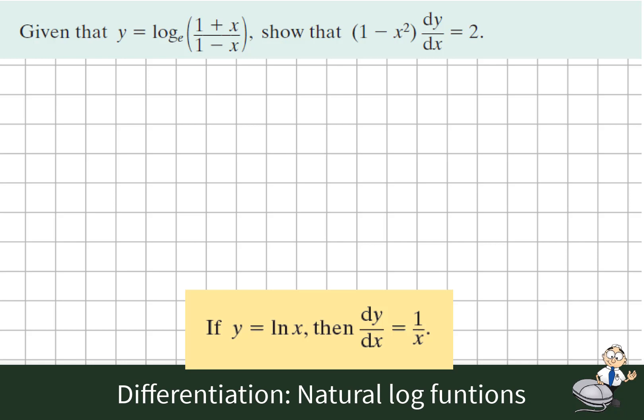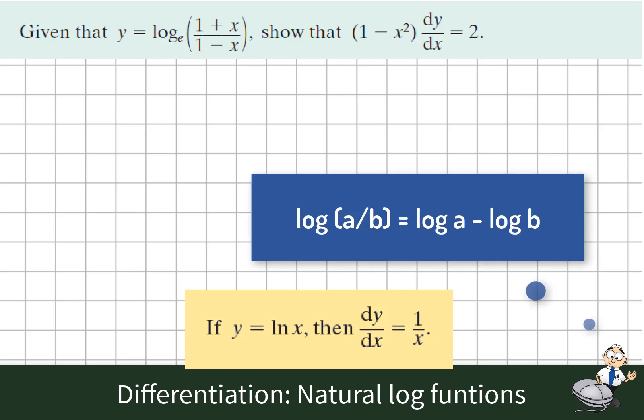Finding the derivative, we could use the chain rule with the outside function being the natural log and the inside function being the ratio (1+x) divided by (1-x). It is much easier, however, if we use the laws of logs. We know that the log of a divided by b is equal to log of a minus log of b. And using these laws makes this question much easier.